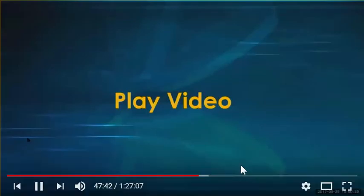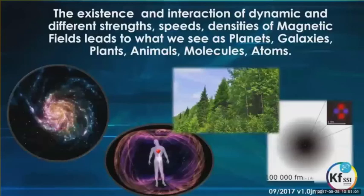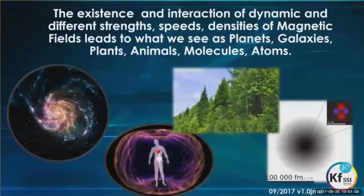That video illustrates what the nano-layers are, how they are formed, and why we need to create them. As explained in the first section, the existence and interaction of dynamic fields of different strengths, speeds, and densities leads to what we see as planets, galaxies, bonds, animals, molecules, and atoms. So everything is fields.